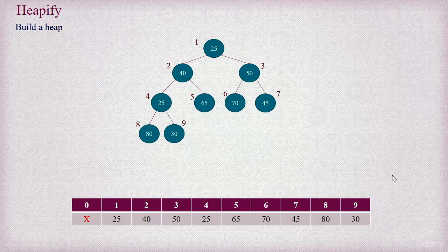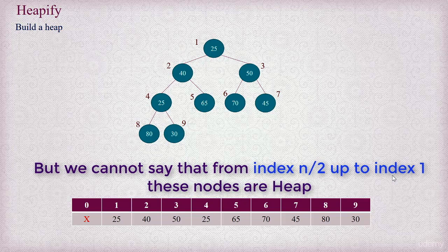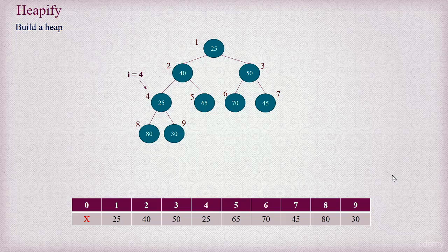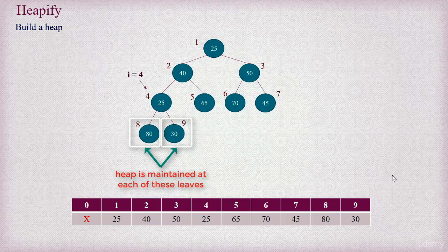Now, from index n divided by 2 down to index 1, we cannot say that a heap is rooted at these indices. However, for index 4, you can see that a heap is maintained at its left child at index 8 and also at its right child at index 9, because they are leaves. So we just make a call to the adjust operation to adjust index 4 so that a max heap is maintained there. The adjust operation adjusts a particular index if its left child is a heap and its right child is a heap, making that index a heap.